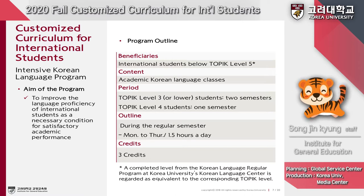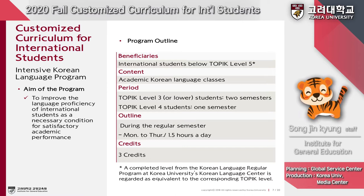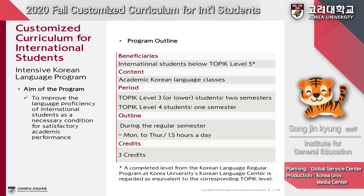Students below TOPIK level 5, which means from level 1 to level 4, are required to take the intensive Korean course. Students attending the Korea University Language Center program will be considered equally. Students with TOPIK level 4 must take one semester, and students with TOPIK level 1 to 3 must take a year-long program. Students will attend class four days per week, with each class running for 1.5 hours.